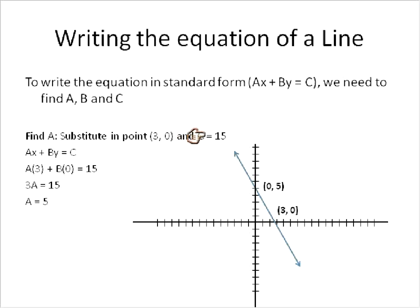We want to remember these numbers: C is 15, A is 5. And now we're going to solve for the value of B. To solve for the value of B, we substitute in the other point into the standard form of a linear equation. So A times our x value of 0, B times our y value of 5, and C being equal to 15. When we solve, A times 0 is 0, so that cancels itself out. 5 times B is 5B, and that's set equal to 15. So B is equal to 3.